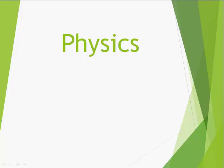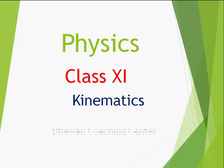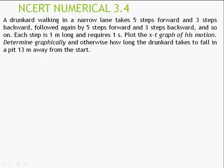In this video we solve certain numericals of kinematics to understand kinematics well — a Class 11th topic. Let's take one of the NCERT numericals, 3.4: the drunkard walking in a narrow lane.